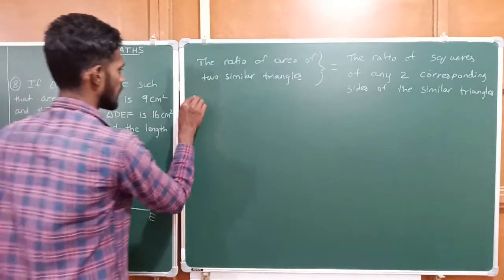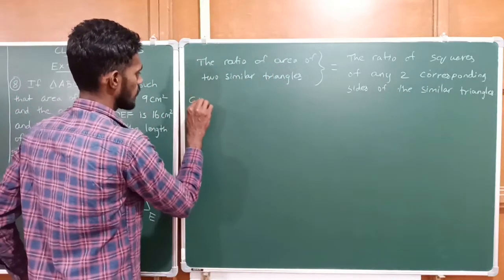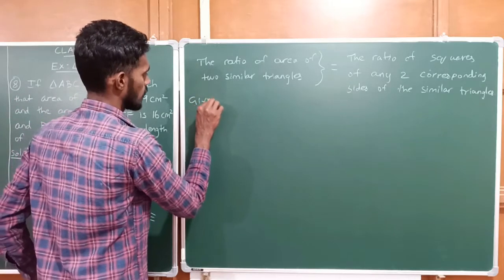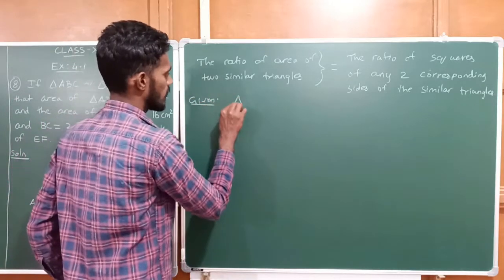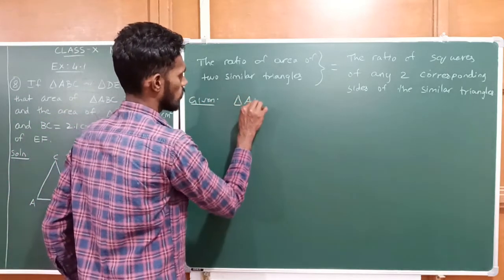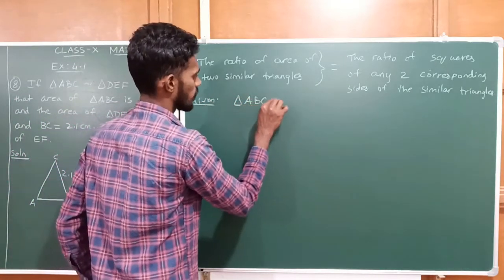Given that triangle ABC is similar to triangle DEF. Since the two triangles are similar, their corresponding sides are proportional.